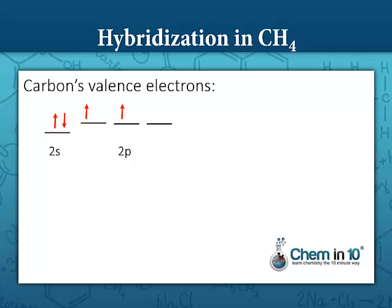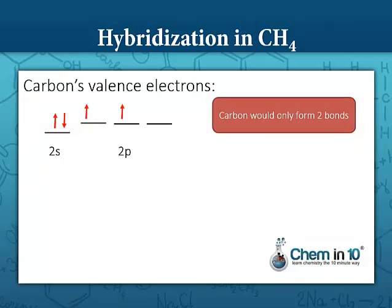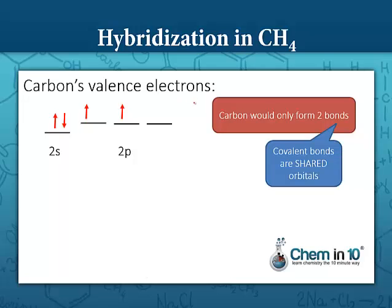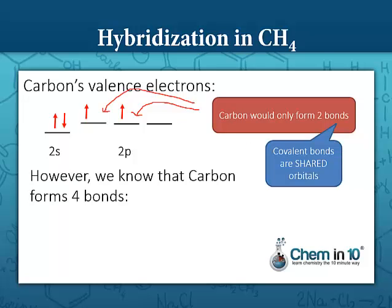Given this orbital filling diagram, we would expect that carbon would only form two bonds — it would form a bond here where electrons would be shared, and a bond here where electrons would be shared, because covalent bonds are a sharing of electrons. However, we know that carbon forms four bonds. This is the Lewis dot structure for methane, CH4.